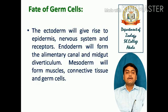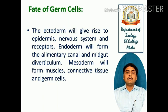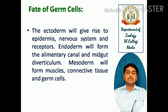The fate of the germ layers is as follows: ectoderm will give rise to the epidermis, nervous system, and receptors. Endoderm will form the alimentary canal and midgut diverticulum. The mesoderm, the third layer, will form some muscles, connective tissue, and germ cells.